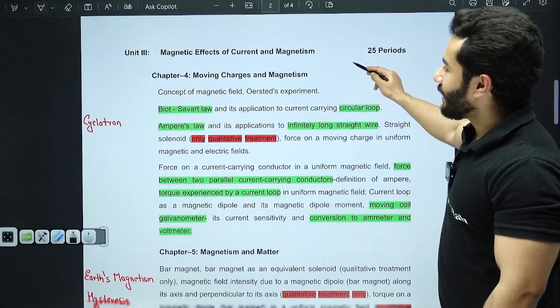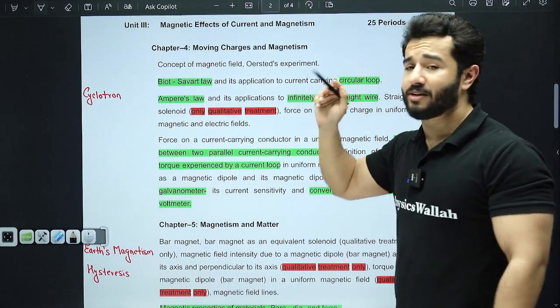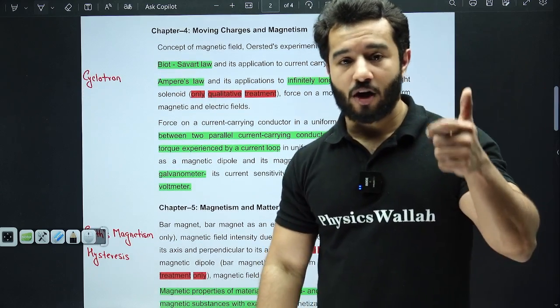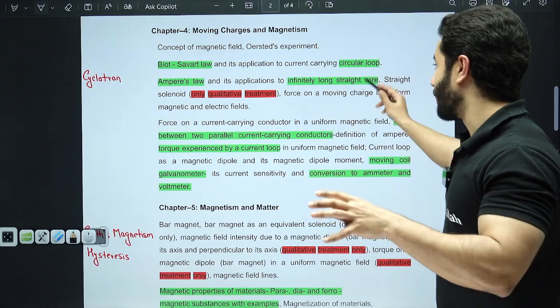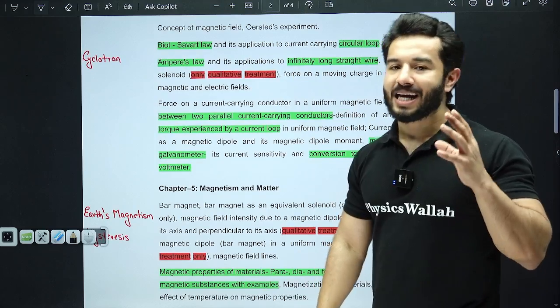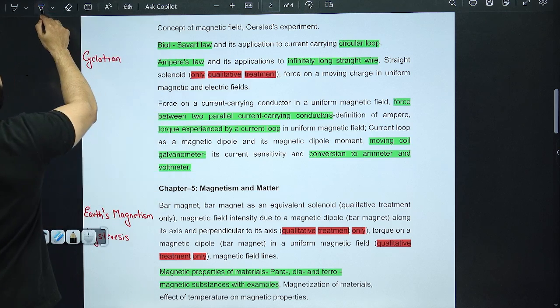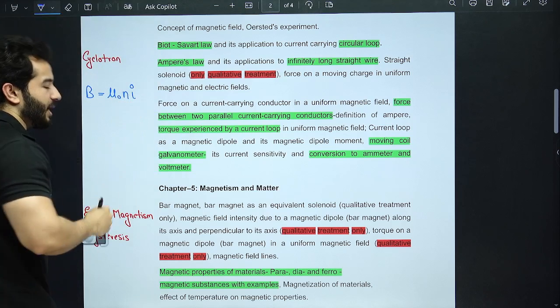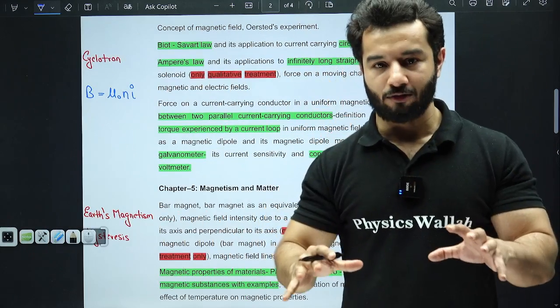Moving on, Unit 3, which is basically magnetism—moving charges and magnetism. Biot-Savart's law is important, and in this, the application of Biot-Savart's law in finding out the magnetic field due to a circular loop is actually important. Ampere's law is important. Very important thing: solenoid magnetic field. What is the magnetic field due to solenoid? The magnetic field due to solenoid is μ₀nI, where small n is the number of turns per unit length.